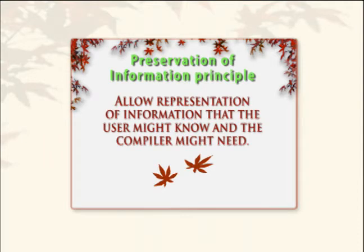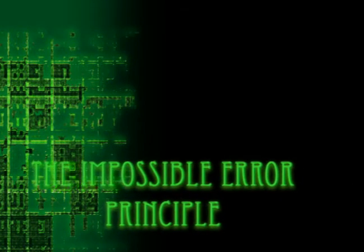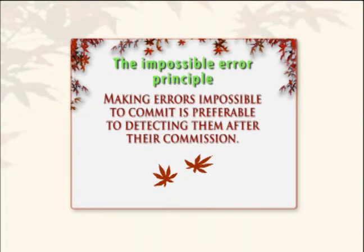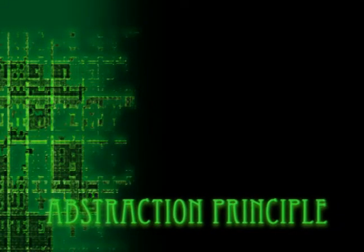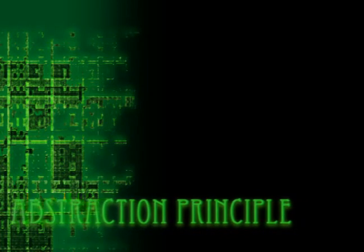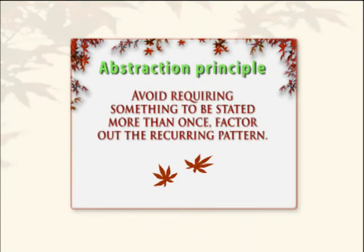The preservation of information principle states: allow representation of information that the user might know and a compiler might need. The impossible error principle states: making errors impossible to commit is preferable to detecting them after their commission.